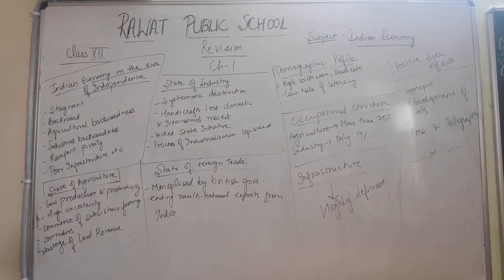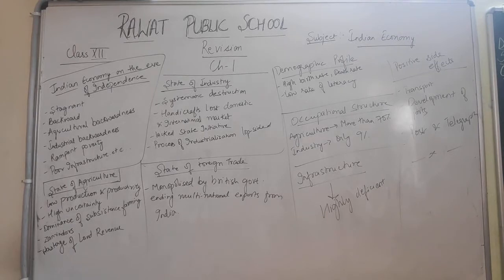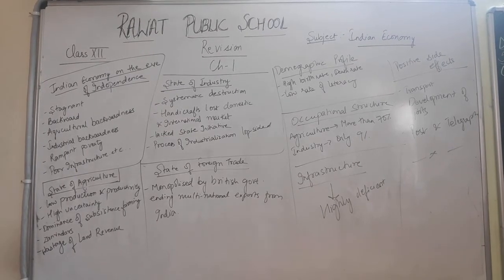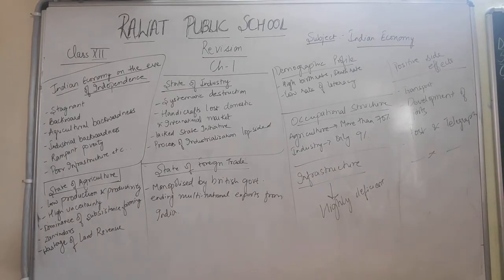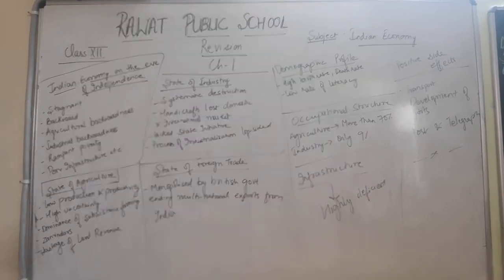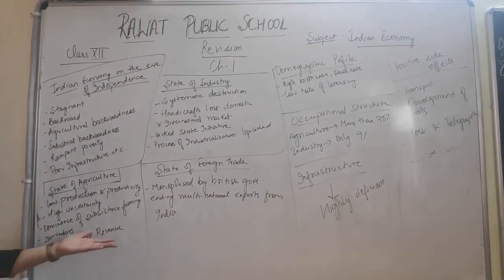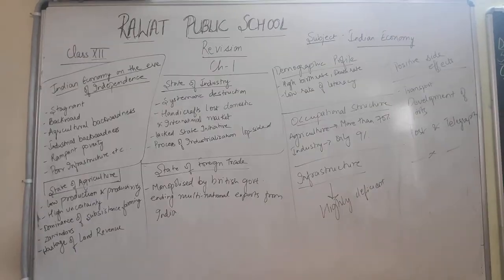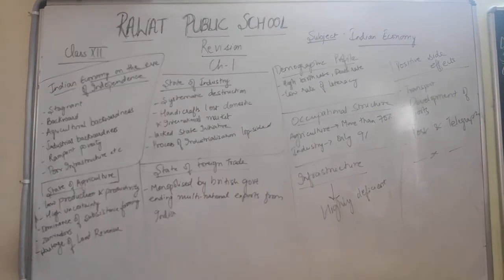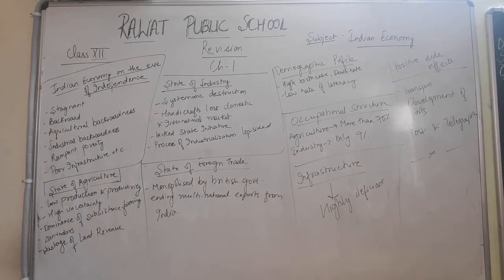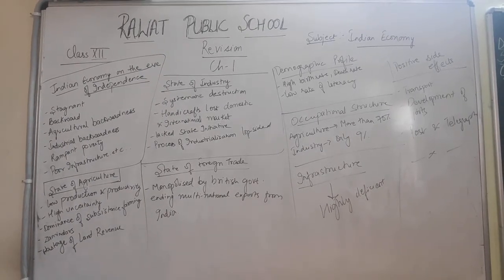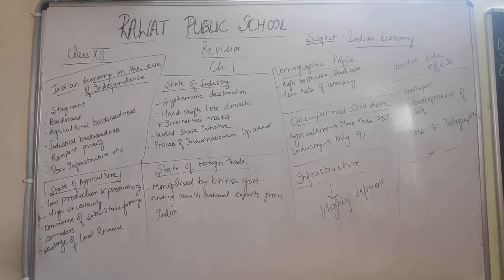Next is the state of foreign trade under British rule. Foreign trade of India was hit in two ways. First, the composition of trade shifted from the export of finished goods to the export of raw materials, and from the import of gold and silver to the import of finished industrial products. India was made to export primary and raw materials and import finished products at high prices. Additionally, where India had trade with other countries, the British took over and controlled it. This ultimately ended the mighty national exports from India.